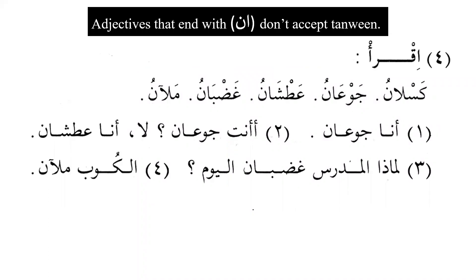Now we read — iqra'. This is placed here as a reminder: adjectives that end with alif and nun do not accept tanwin, meaning they are mamnu' mina al-sarf or diptotes. The same applies to nouns ending in alif and nun — they are also mamnu' mina al-sarf. Examples: 'Imranu,' 'Sulaymannu,' 'Uthmannu' — these are all mamnu' mina al-sarf.